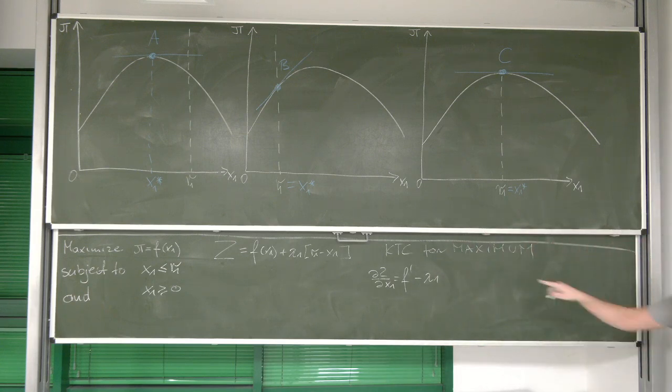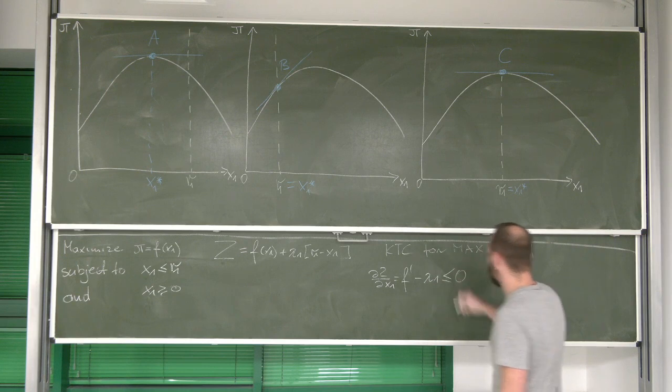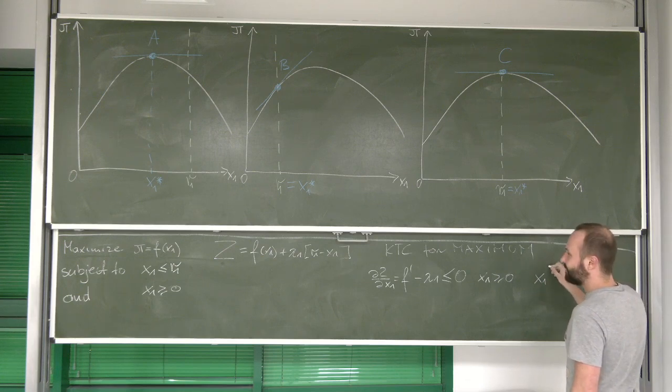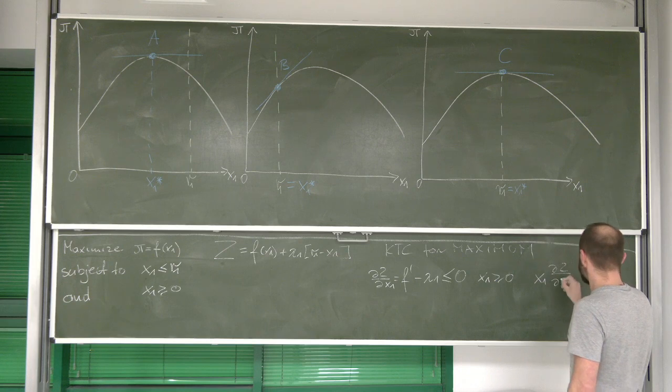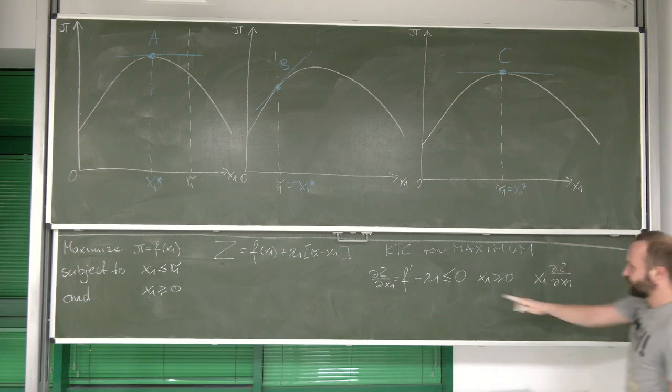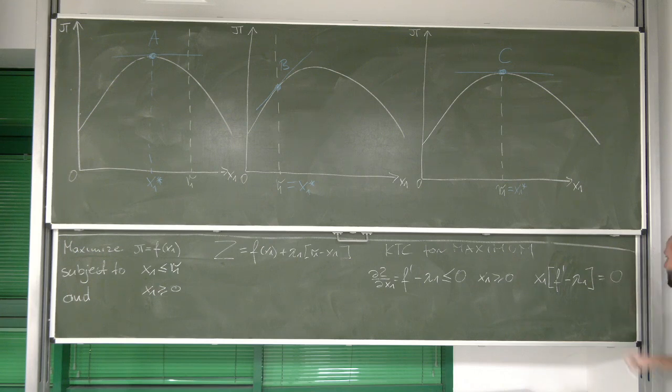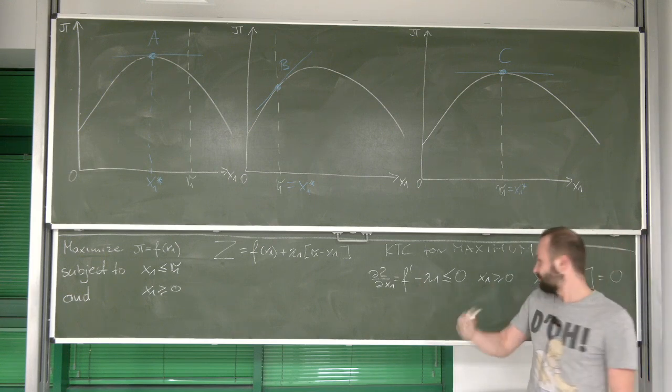At the same time, we know that this needs to be lower or equal to zero. We need to require that x1 is higher or equal to zero, and by complementary slackness x1 times derivative dz dx1, which is equal to this. Maybe let's already write it like this. f prime minus lambda 1 must be equal to zero, which means that this or this must be equal to zero.